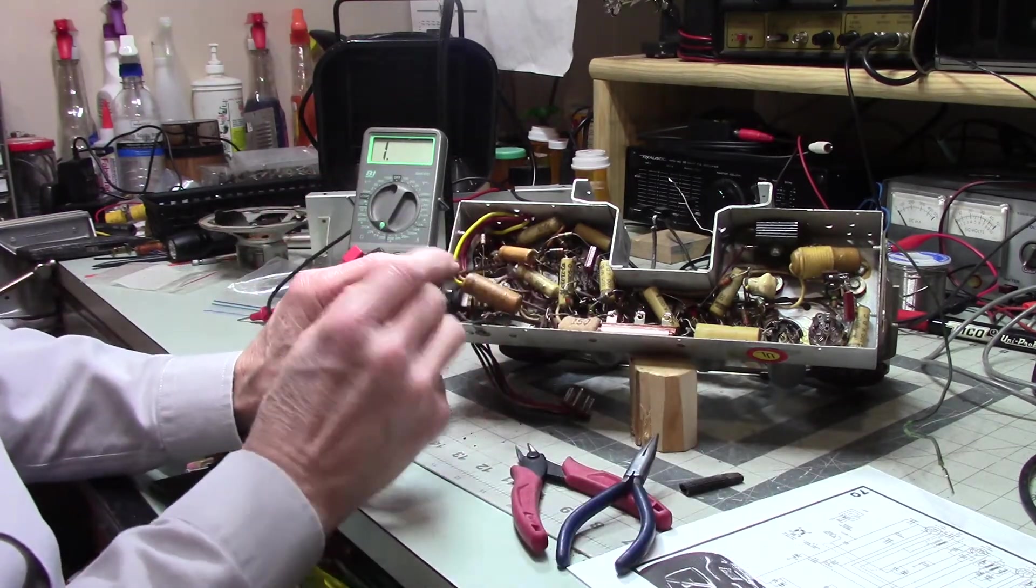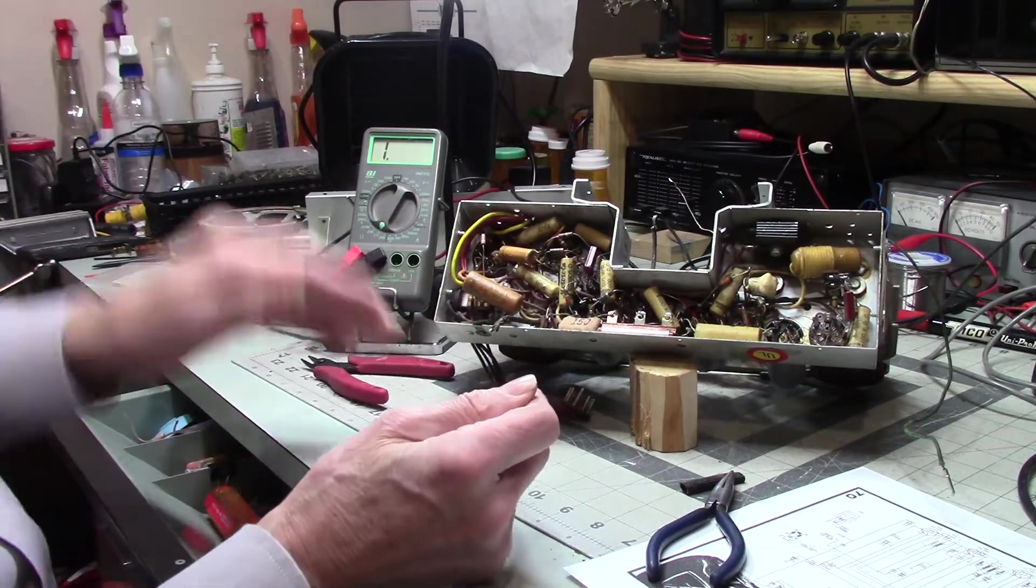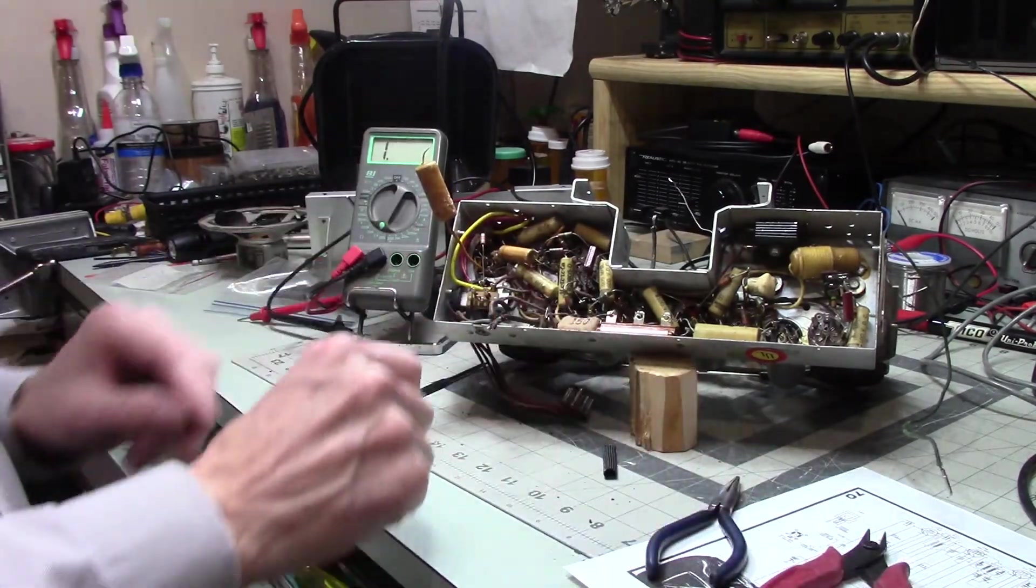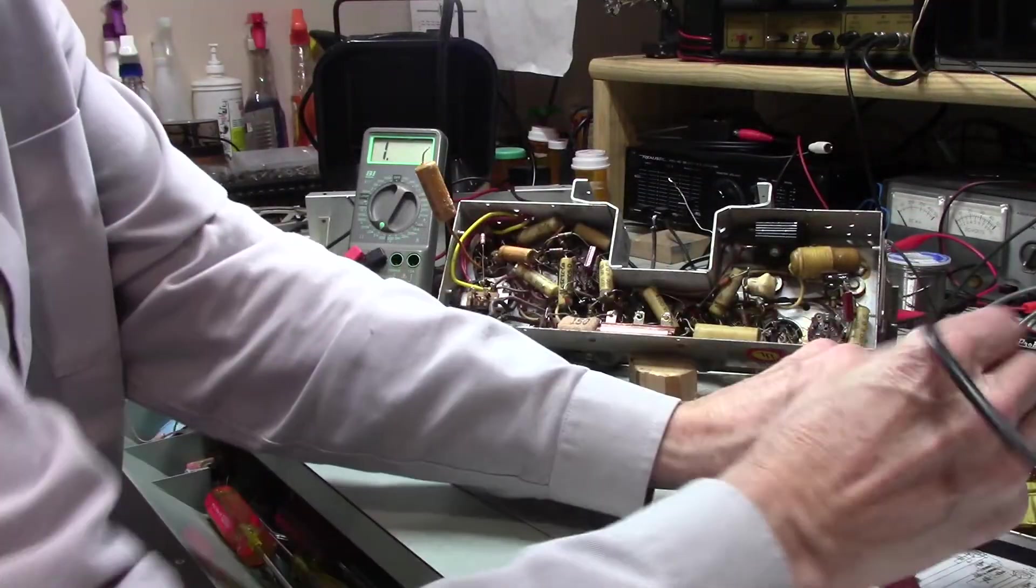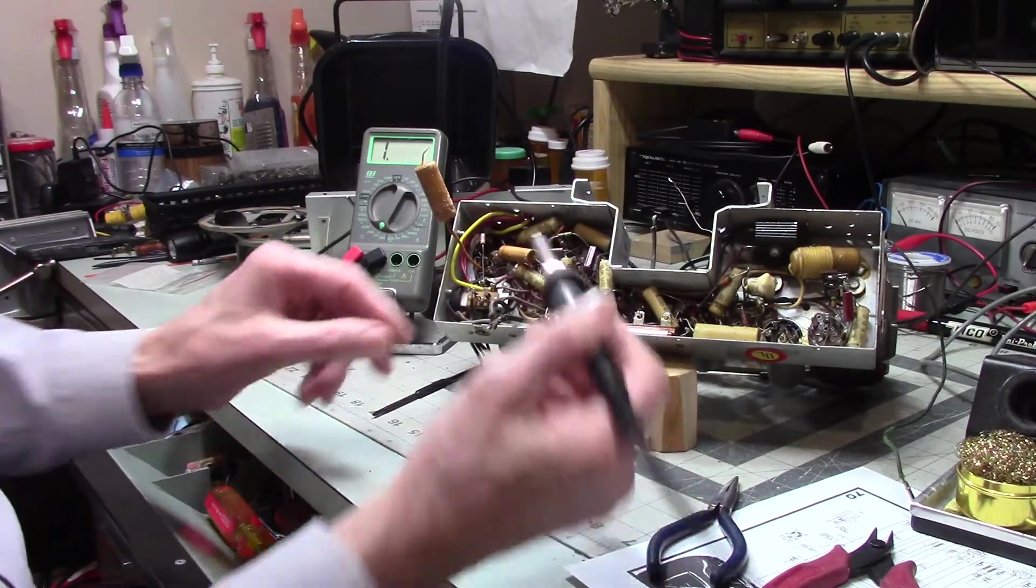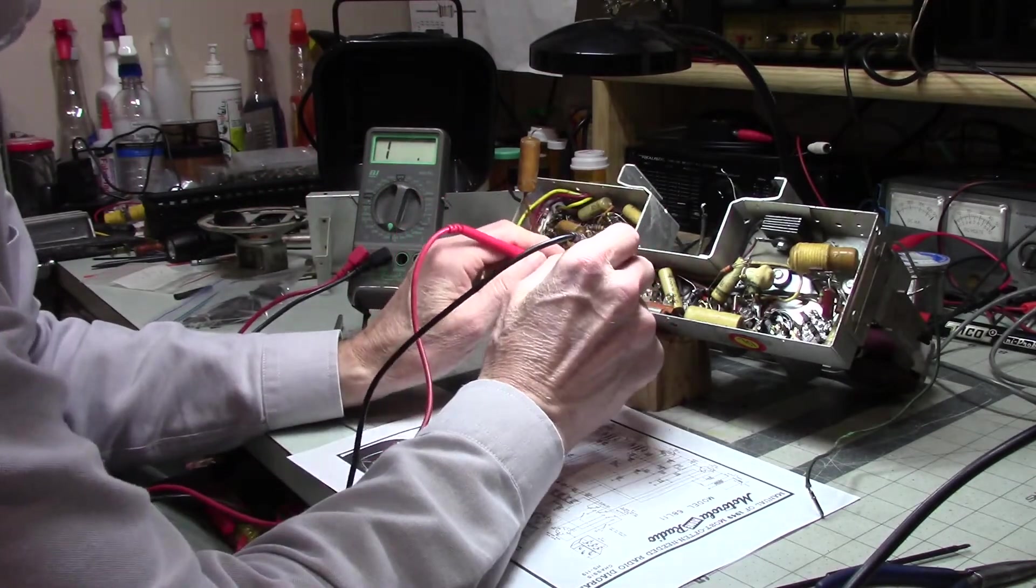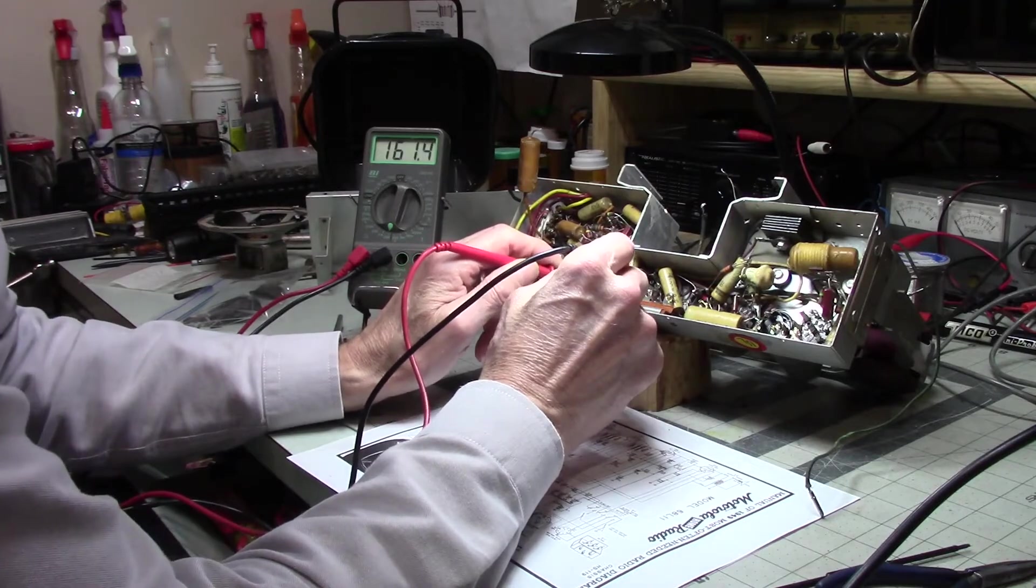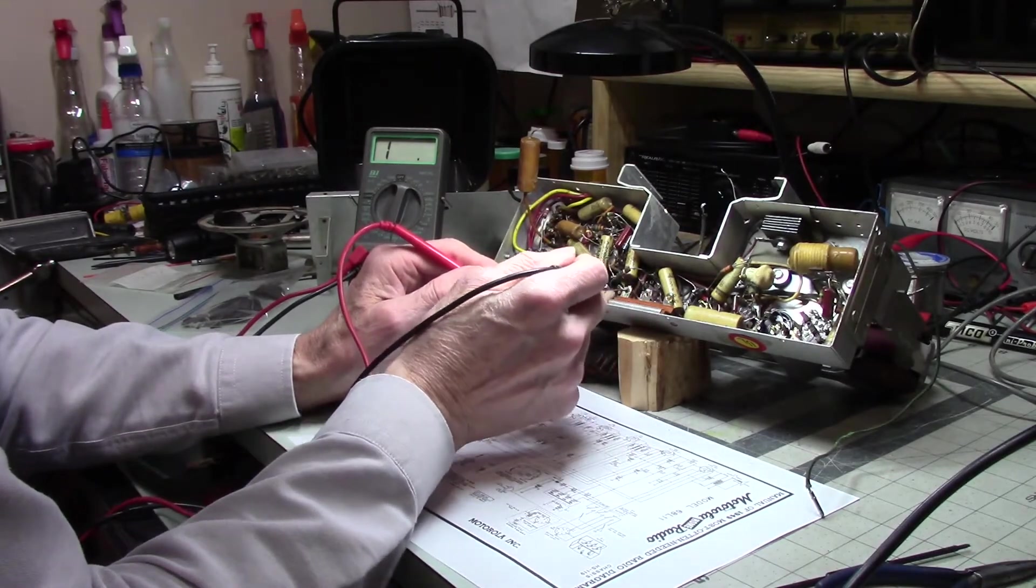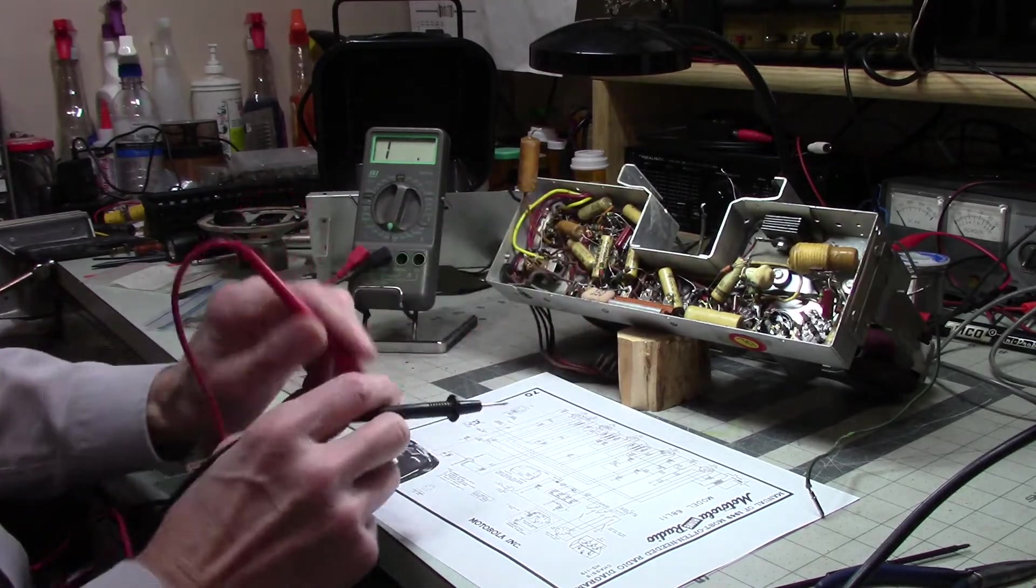This capacitor goes between one leg of the power cord to the common ground. So that's got to go. So we're going to just nip you right off from there for now. Some of these sand resistors, they get corrosion here, and the corrosion actually gets inside the resistor and breaks the connection. But this one is reading only slightly high - 160 ohms instead of 150. That's fine.